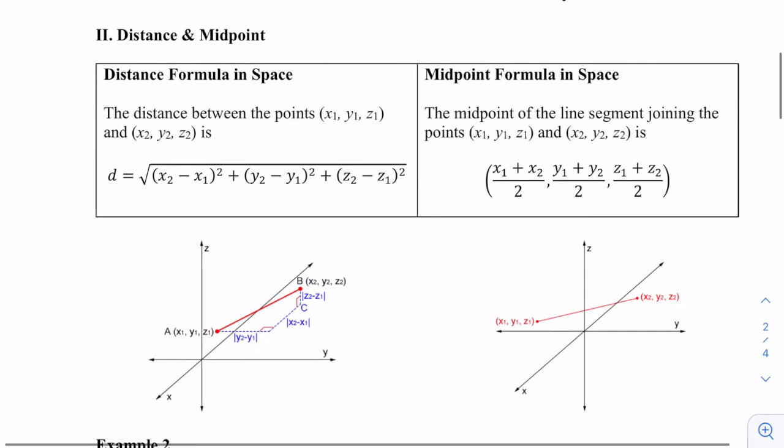Just like on a two-dimensional plane, we can find the distance and midpoint. We can do that as well with the three-coordinate system. For the distance formula, we actually just need to use the Pythagorean theorem twice to get the formula. The distance is the square root of the sum of all those differences squared. The midpoint is very similar to what we're used to. We're going to find the average distance between each coordinate.